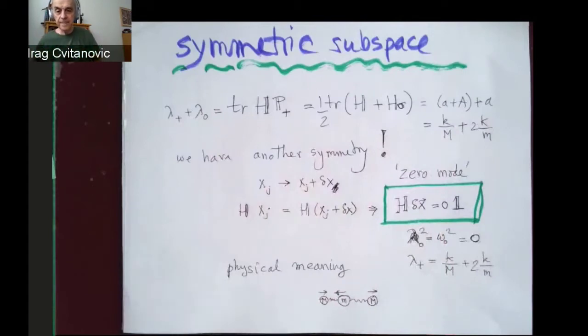And the general principle is whenever you have continuous symmetry, there should be zero eigenmodes. What is now the meaning of the other eigenmode? So now we know the eigenvalue is just a sum because this one is zero. So what's its meaning?